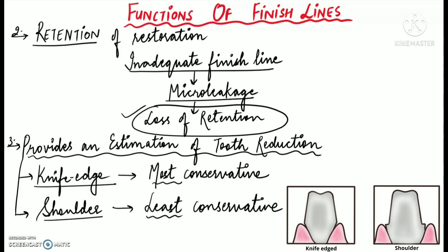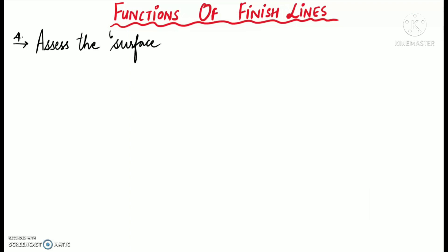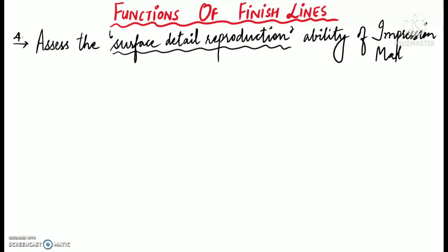Another function of finish line is that finish line design helps us to assess the surface detail reproduction ability of the impression material. What does this mean? This means that the finish line design helps us to measure that how accurately a particular impression material can reproduce the surface details.